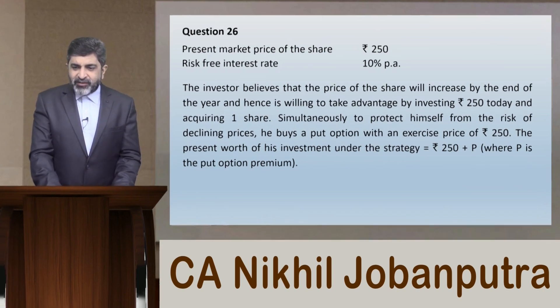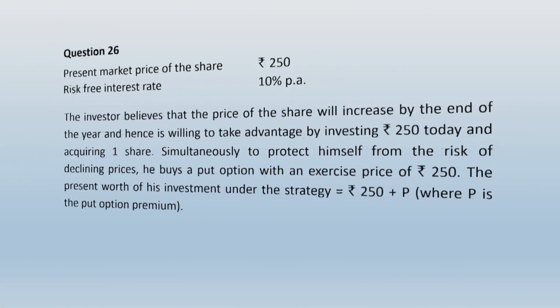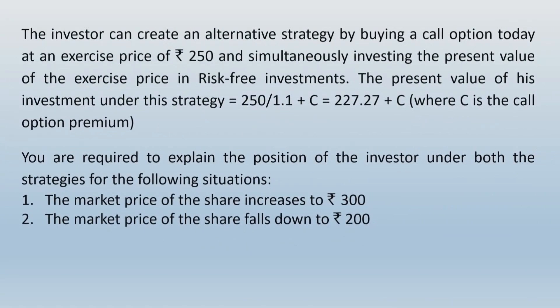The question describes one more strategy. The investor can create an alternative strategy by buying a call option today at an exercise price of Rs 250 and simultaneously investing the present value of the exercise price in risk-free investments. The present value of his investment under this strategy equals 250 divided by 1.1 plus C — that is 227.27 plus C — where C is the call option premium.